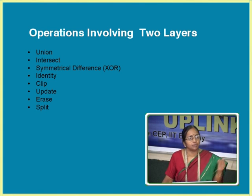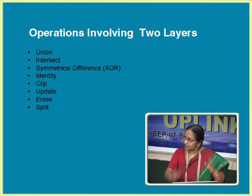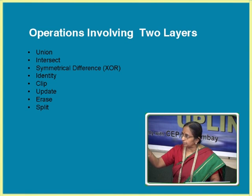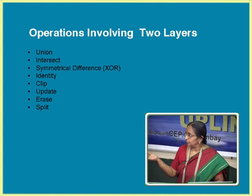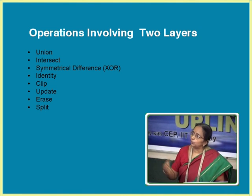Union means the same as in set theory — A union B creates a new set which will have all the elements of A and all the elements of B. Intersect is A intersection B — what is common to both. In a Boolean concept, A union B is Boolean OR, and A intersect B is Boolean AND. Both must be true for AND; either of them can be true for OR. So Boolean OR equals union and Boolean AND equals intersect.